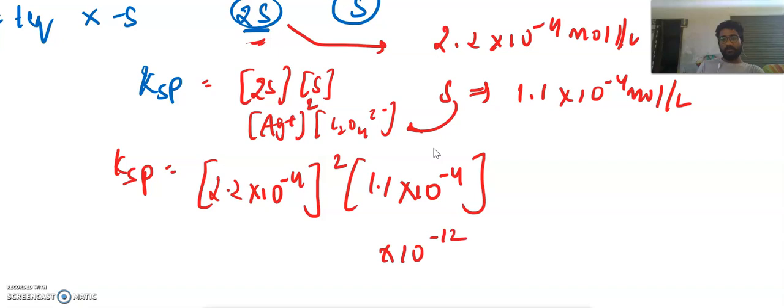This into 10 power minus 12, 2.2 square into 5.1, and nearly 4.84 into 1.1 is nearly 5.32 into 10 power minus 4 minus 12 is our Ksp.